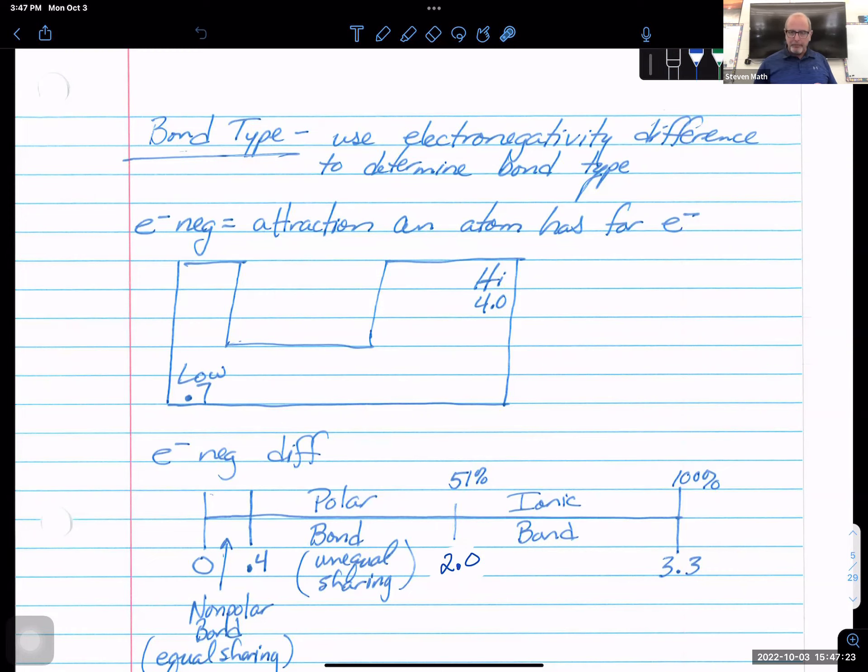At last we'd left our faithful hero, we had covered lattice energies and the energy of interaction between ionic particles and what makes ionic particles form a crystalline lattice. Now today's lesson is quite a bit different. Now we're talking about covalent bonding.